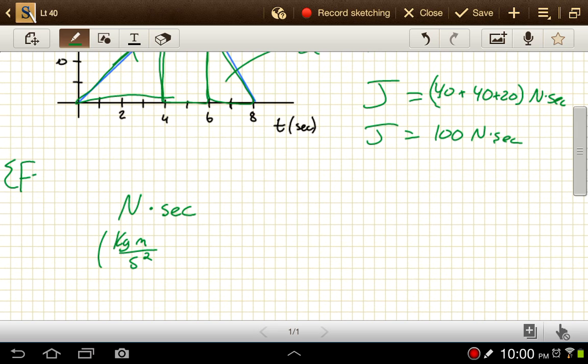...net force, is equal to mass times acceleration. So, we've got mass in kilograms, acceleration in meters per second squared. So, kilogram meters per second squared times seconds. I have one factor of seconds cancel out, and this is just going to be kilogram meters per second.